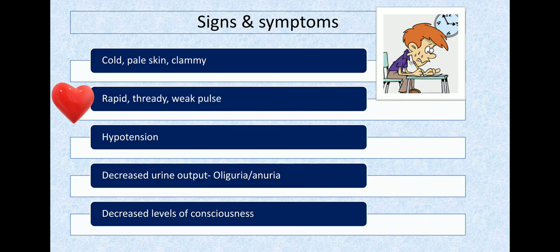Hypotension: blood pressure less than 90 by 60. Kidneys receive less blood flow, causing decreased urine output due to reduced GFR—oliguria or maybe no urine in late stages. When the brain receives less blood flow, there's decreased level of consciousness in late stages.